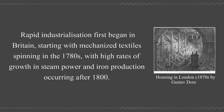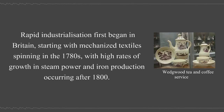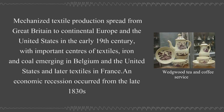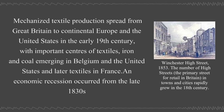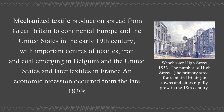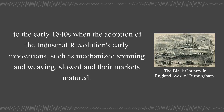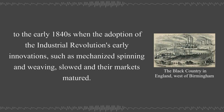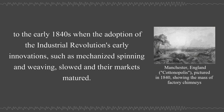Rapid industrialization first began in Britain, starting with mechanized textile spinning in the 1780s, with high rates of growth in steam power and iron production occurring after 1800. Mechanized textile production spread from Great Britain to continental Europe and the United States in the early 19th century, with important centers of textiles, iron and coal emerging in Belgium and the United States and later textiles in France. Economic recession occurred from the late 1830s to the early 1840s, when the adoption of early innovations such as mechanized spinning and weaving slowed and their markets matured.